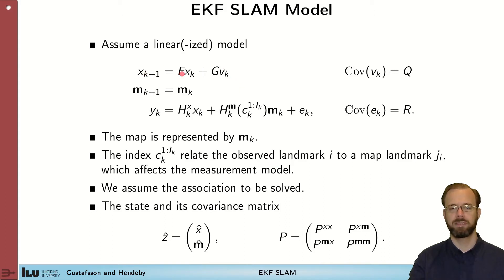To use the EKF we will assume a linearized model of this kind measurement. So we have a linear model for the propagation of the state, xk plus 1 equals f times xk plus process noise. The map stays the same. The measurements that we use are linear as well. It's a linear function of x and a linear function of the map. Note that the linear function that we use in front of the map depends on which landmarks that we have observed and in which order.